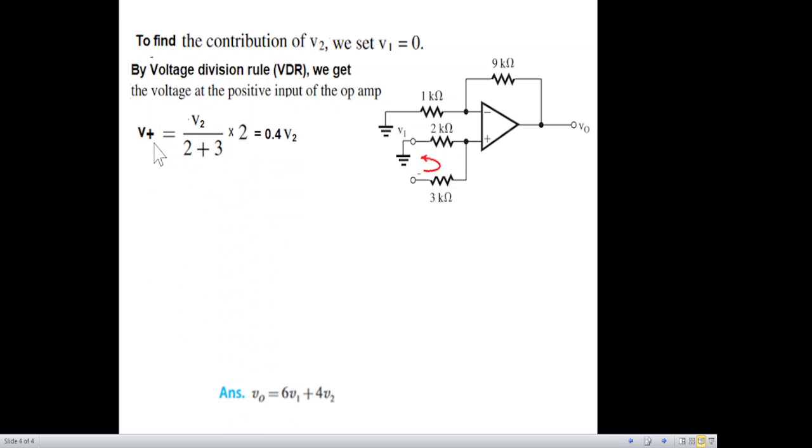So v_positive due to v2 is again voltage v2 here divided by 3k plus 2k, and this time multiplied by 2k because this is connected to ground. So we take this voltage with respect to ground, and that is multiplied by 2. The answer is 0.4 v2, and same formula we'll use because we are...